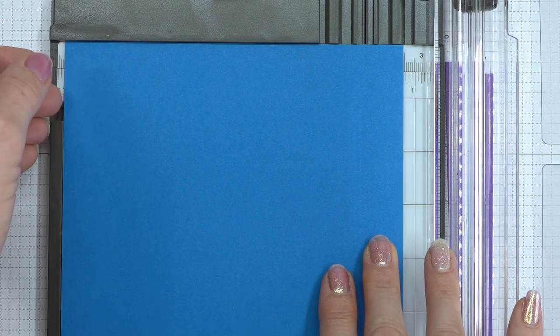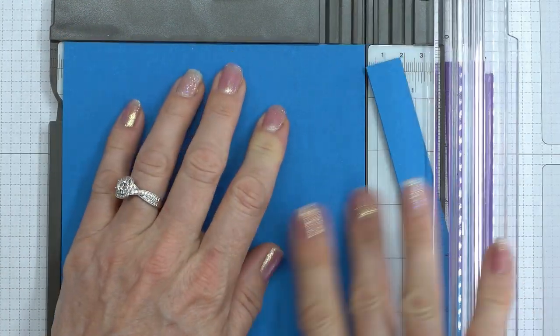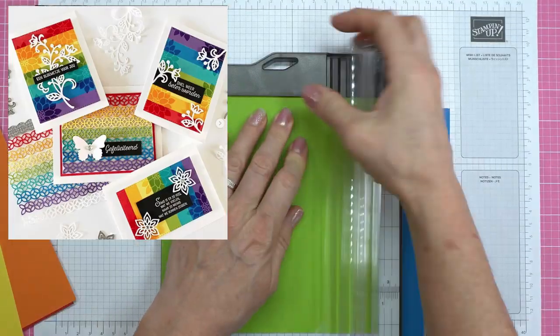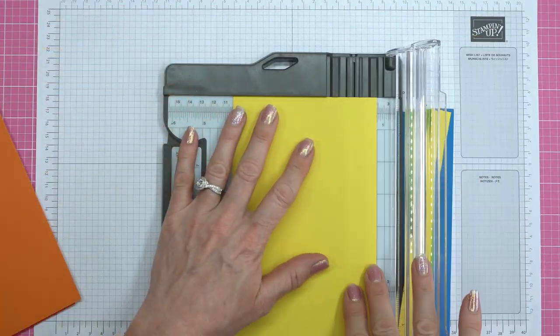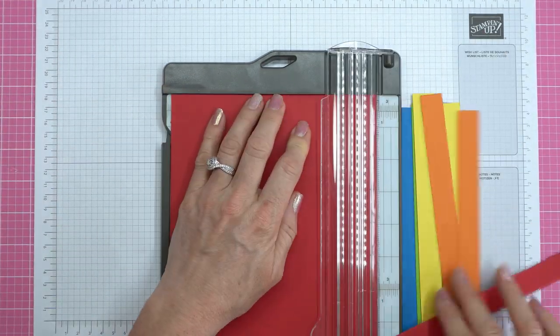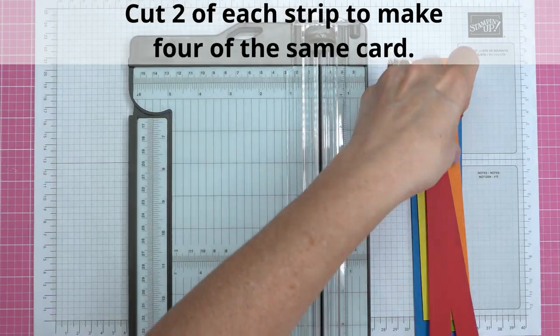Today I'm taking a card from the Stampin' Up Instagram page and this was an artisan card. So I'm going to pull out some Real Red, Pumpkin Pie, Daffodil Delight, Granny Apple Green, Pacific Point, and Gorgeous Grape. And I am going to cut three quarter inch strips of that.